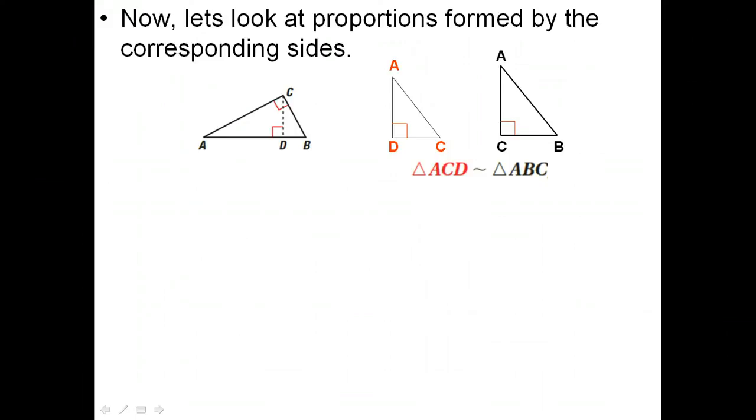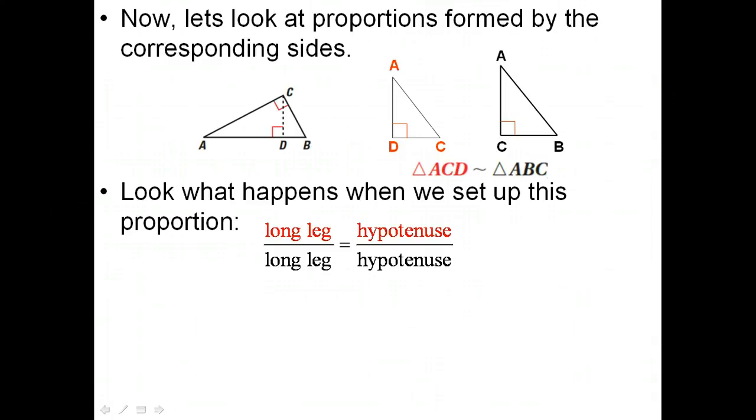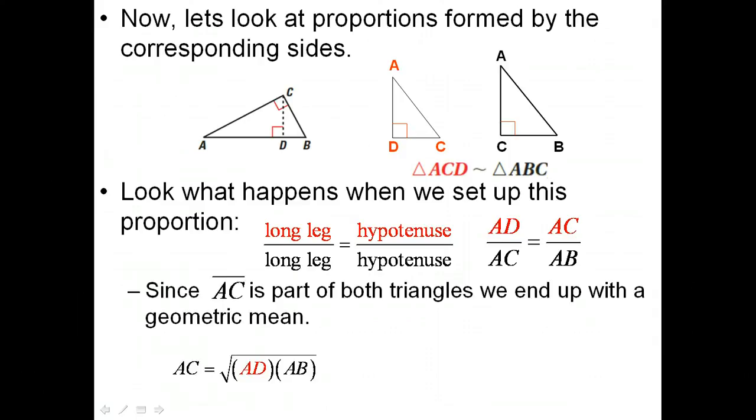First, let's look at the medium sized triangle compared to the original triangle or the large one. If we set up a proportion where the long leg of the medium compared to the long leg of the large, with the hypotenuse of the medium and the hypotenuse of the large, we can see that what we get is AC as the means of the proportion. And therefore AC must be the geometric mean of the other two. So AC is equal to the square root of AD times AB.